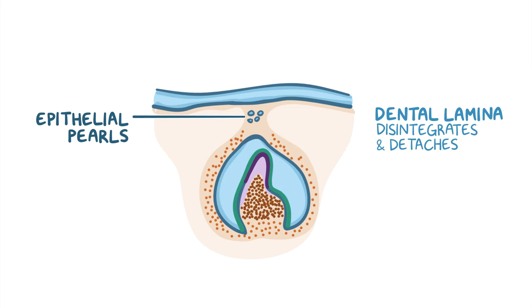Examples of abnormalities arising from epithelial pearls include supernumerary teeth, odontoma, and eruption cysts.